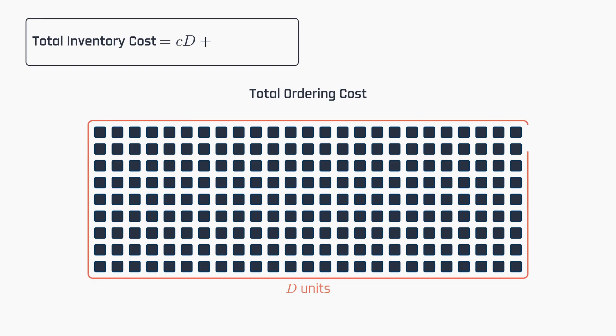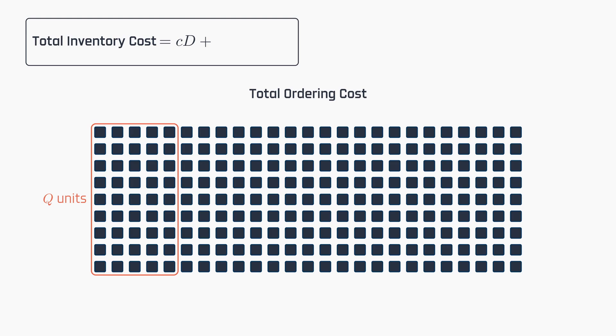Assuming an annual demand of D units, and utilizing a lot size of Q units per order, the total number of orders required throughout the year can be calculated as D over Q. By multiplying this quantity by the setup cost per order, C sub T, we obtain the total setup cost for the year.